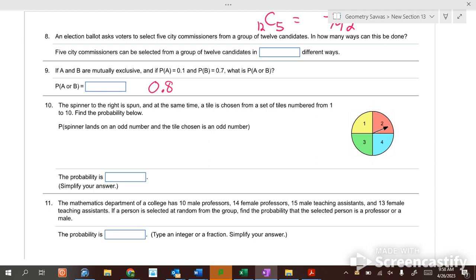The spinner on the right is spun at the same time a tile is chosen from a set of tiles. The spinner lands on an odd number and the tile chosen is an odd number. Odd and odd. Well, there's two of the four that are odd and then there's five of the ten that are odd. So it's one-half and one-half and do you add or multiply? Multiply. So you get one-fourth. One out of four chance that they're both odd.